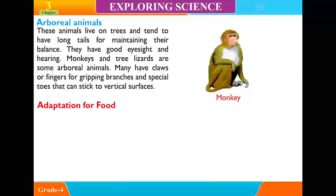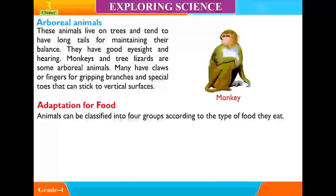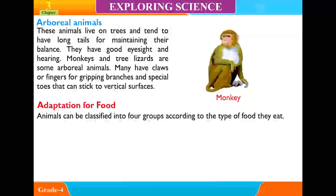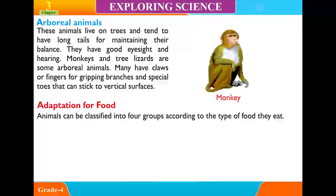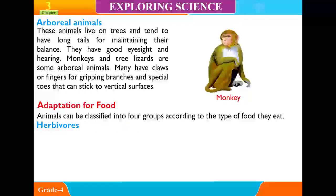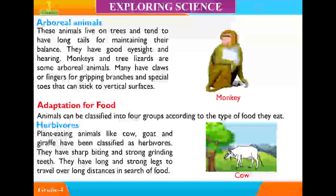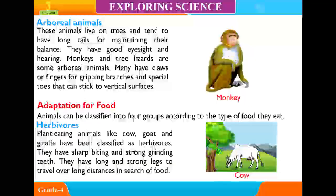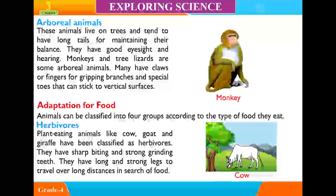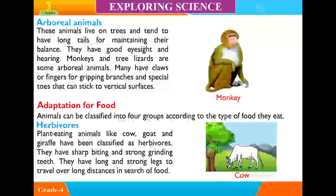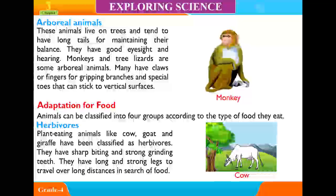Adaptation for food. Animals can be classified into four groups according to the type of food they eat. Herbivores. Plant-eating animals like cow, goat, and giraffe are classified as herbivores. They have sharp biting and strong grinding teeth. They have long and strong legs to travel over long distances in search of food.